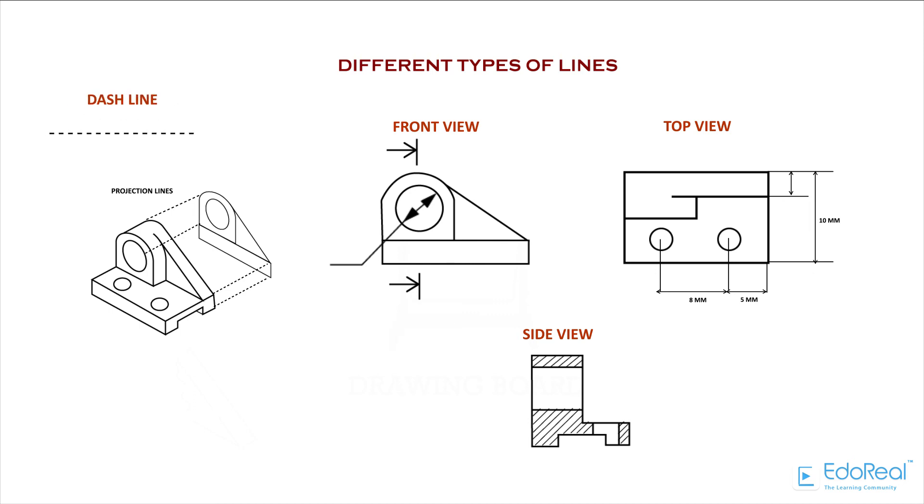Dash Line. This line is used to show hidden edges of the main object.